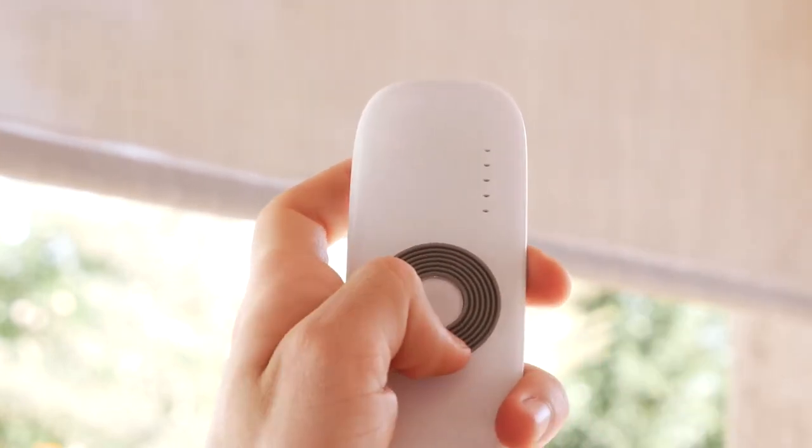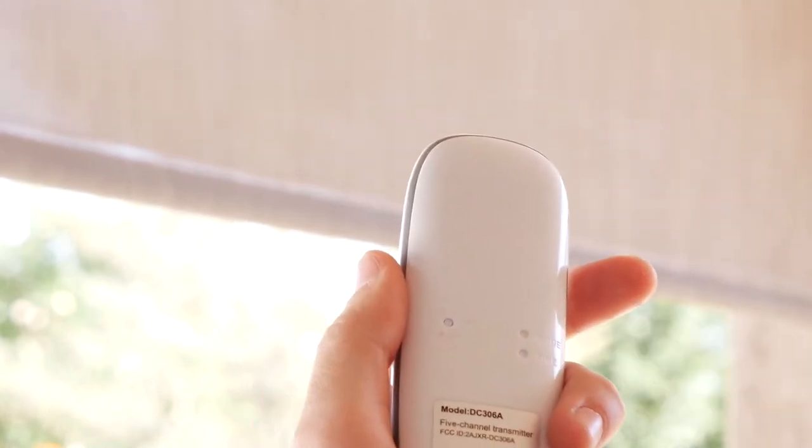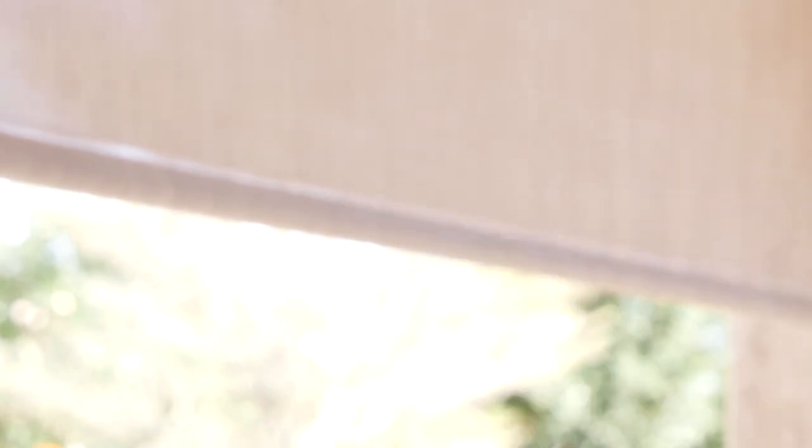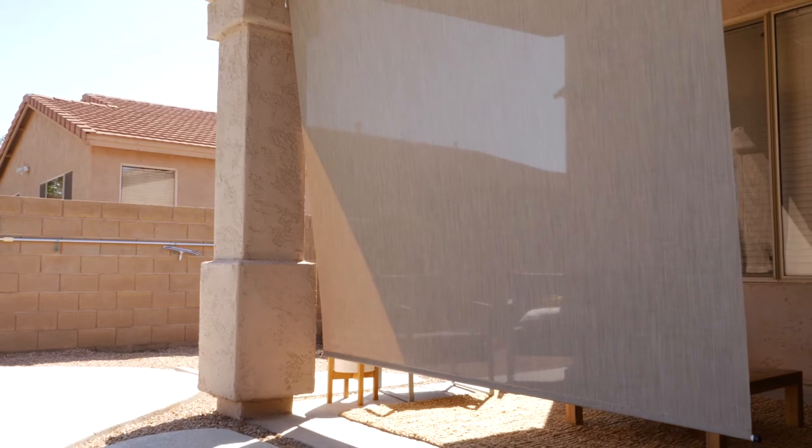Press the down button. The fabric will jog and the motor will beep again. Now press the programming button again. The fabric will jog and the motor will beep another 4 times. You've now deleted the preset top and bottom limits.